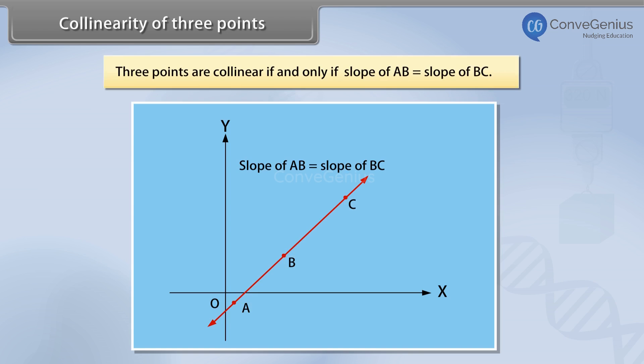Or we can say the three points are collinear if and only if slope of AB is equal to slope of BC. Let us solve an example to understand it better.